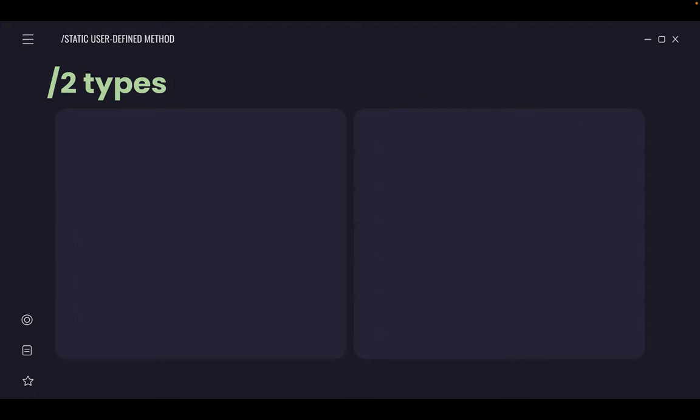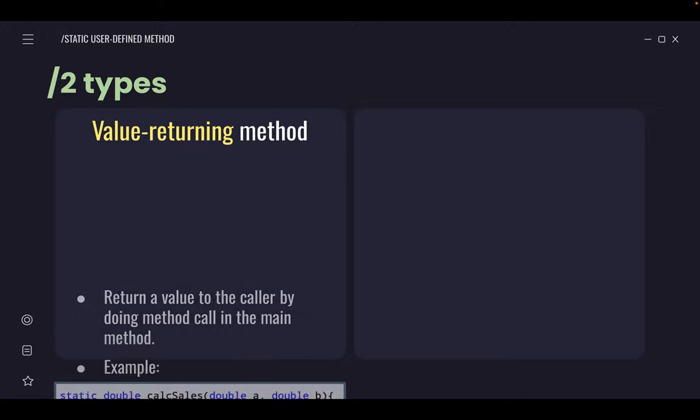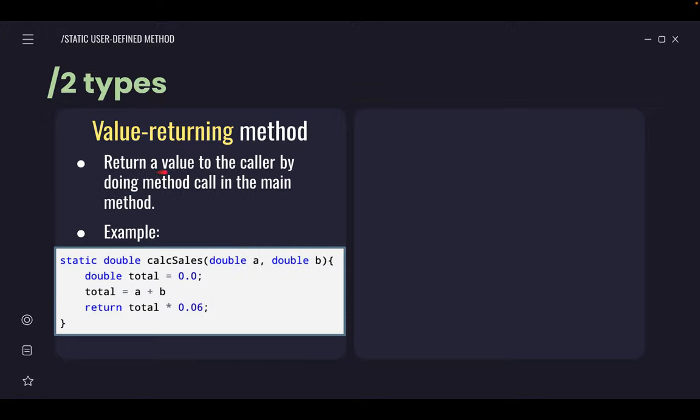Both of them have pros and cons, but we're not going to talk about that because we're going to cover more on static since the syllabus we're going to talk about is static. Enough that you know generally what's the difference between static and non-static. So static user-defined method has two types. The first one is a value-returning method. What does it mean by value-returning? It means that it returns a value to the caller by doing a method call in the main method. Notice here there's static, and then there's a data type. That data type means what value we want to return. A value-returning method will have a return statement at the end. Before we finish our method, we have the word return. What value do we want to return? The value is in the form of data type double.